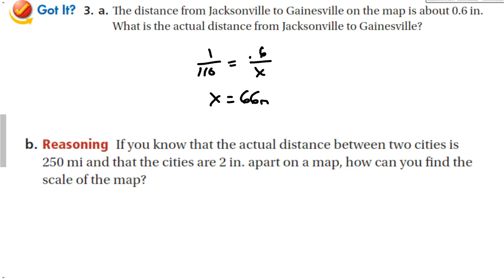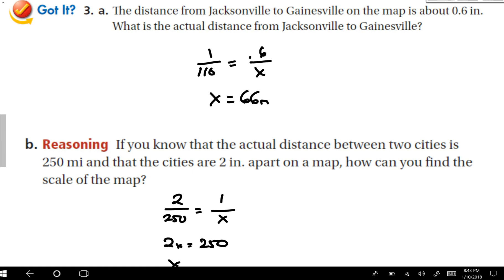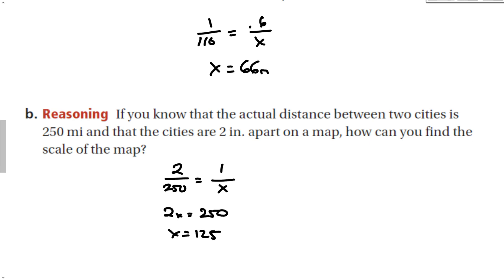If you know that the actual distance between two cities is 250 and the cities are 2 inches apart, how can you find the scale on the map? We can set up my ratio, 2 to 250. But now you might not know either one here, but doesn't it make sense to figure out how far 1 inch is? That would be a good scale, usually comparing 1 something to something else. So now here we get 2X equals 250, which means that X equals 125. So my scale would be 1 inch to 125 miles.